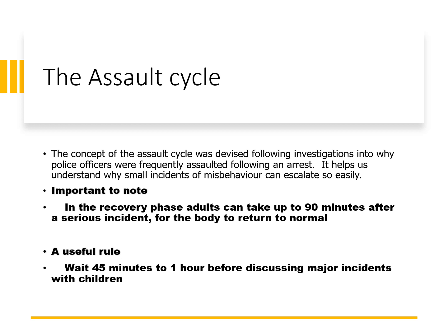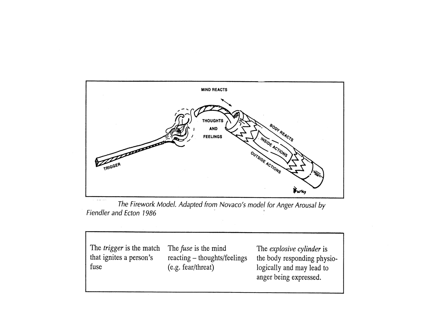It's really important to use visuals with children. Novaco's firework model for anger arousal is very helpful in interactions with children experiencing difficulties in this area — giving them that visual of what happens. The trigger is the match that ignites the person's fuse. The fuse is the mind reacting — your thoughts and feelings, experiencing fear or threat. The explosive cylinder is the body responding physiologically, and this may lead to anger being expressed, either verbally or physically.